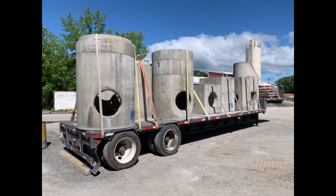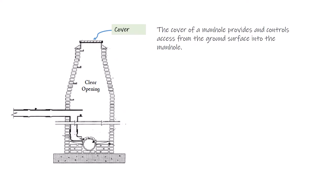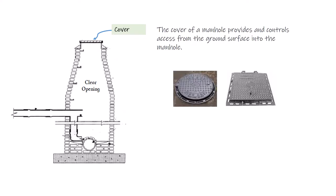Number one: the cover of a manhole. The cover provides and controls access from the ground surface into the manhole. Manhole covers can be made of metal or cast iron, which are very commonly used materials, or less commonly used materials such as precast concrete, glass reinforced plastics, or composite materials.